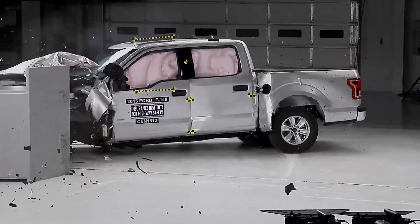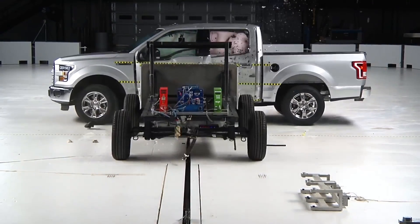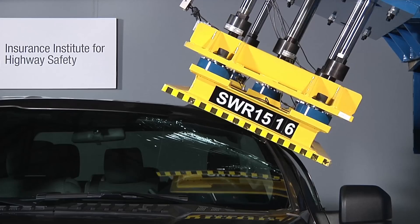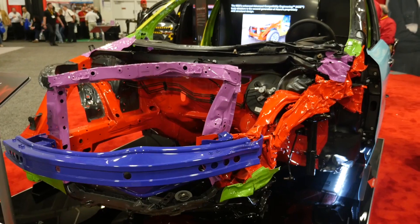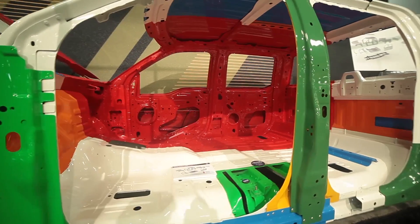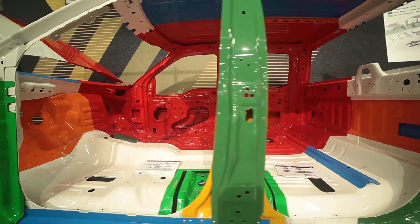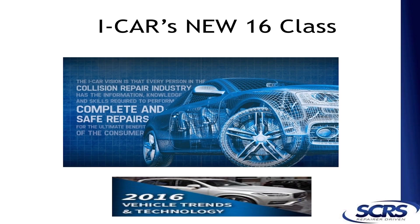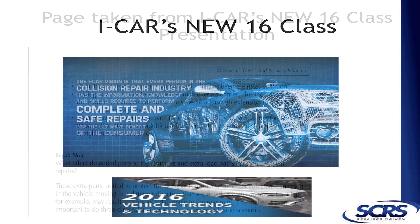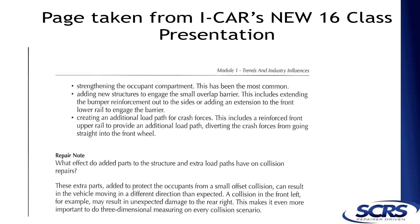How can collision repair professionals successfully educate and negotiate with insurance companies for the additional labor required to properly analyze today's vehicles after a collision? ICAR has stated in its 2016 Vehicle Transit Technology module that the most common changes in automotive design have been to strengthen the occupant compartment, adding new structures to engage the small overlap barrier, and creating additional paths for crash forces.